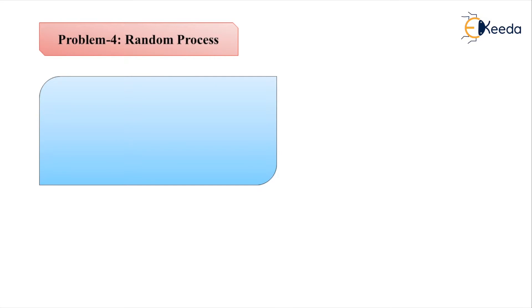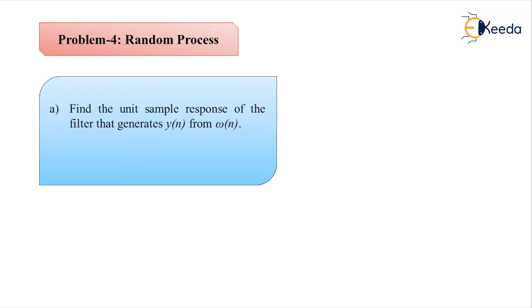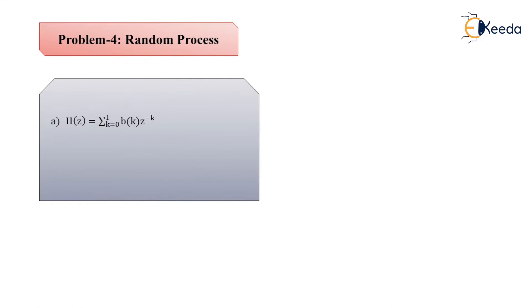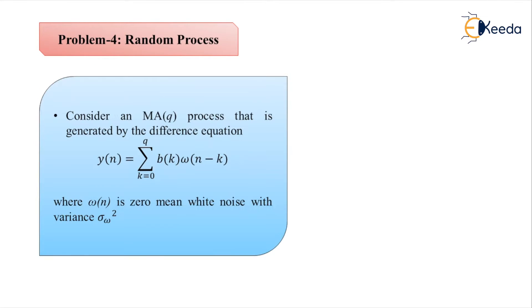We have been asked to find solutions for three parts. Part A: find the unit sample response of the filter that generates y(n) from w(n). Part B: find the autocorrelation of y(n). Part C: find the power spectrum of y(n). This problem is very similar to the previous Problem 3, which was the special case of auto regressive; now we have the special case of moving average random process.